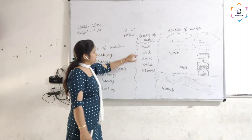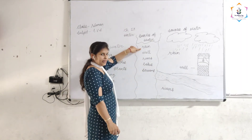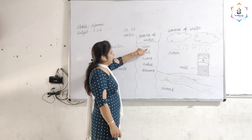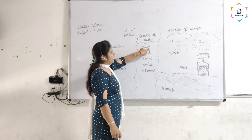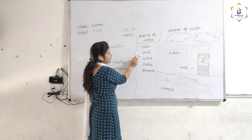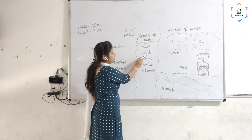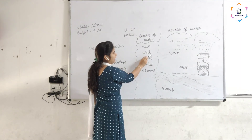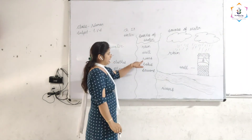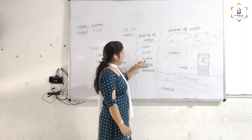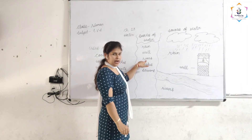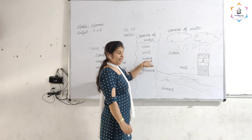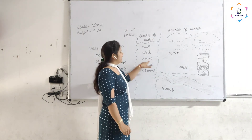Now this spell again. Rain: R-A-I-N. Rain. Next is well: W-E-L-L. Well. Next, rivers: R-I-V-E-R-S. Rivers.